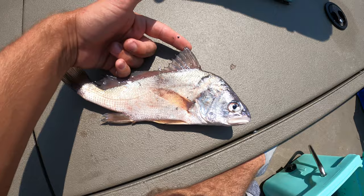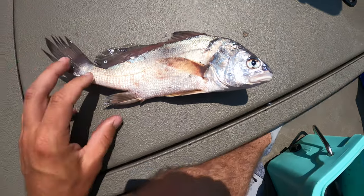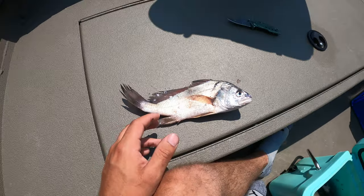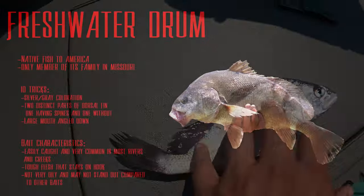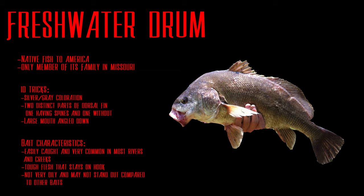Next up we have freshwater drum. This fish is fairly easy to identify — it's kind of in a category of its own. It has a silvery color, a real big tail fin, and a long dorsal fin going all the way down its back. You can catch these on worms, and they range in all different sizes — from small all the way up to 50 pounds. I sometimes catch them while fishing for catfish, and chunks of freshwater drum are pretty effective bait. Very easy to identify and very common in all sorts of waters.